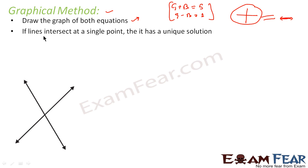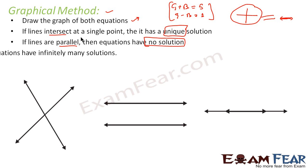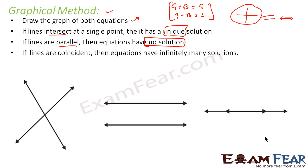If the lines intersect, that means the system has a unique solution. If the lines are parallel, it has no solution. And if they are coincident, then there are infinite solutions.